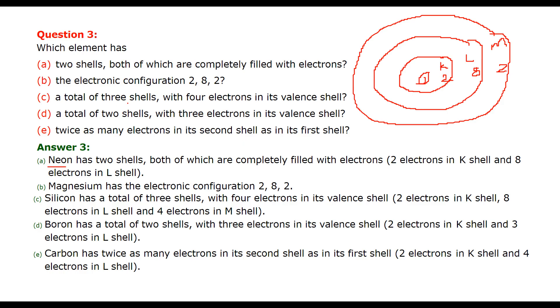The total of three shells means K, L, M with four electrons in the valence shell. That means 2 and 8 are filled and here it has four. So 2 plus 8 is 10, 10 plus 4 is 14, which is actually silicon. Silicon has 2 in K shell, 8 in L shell and 4 in M shell.